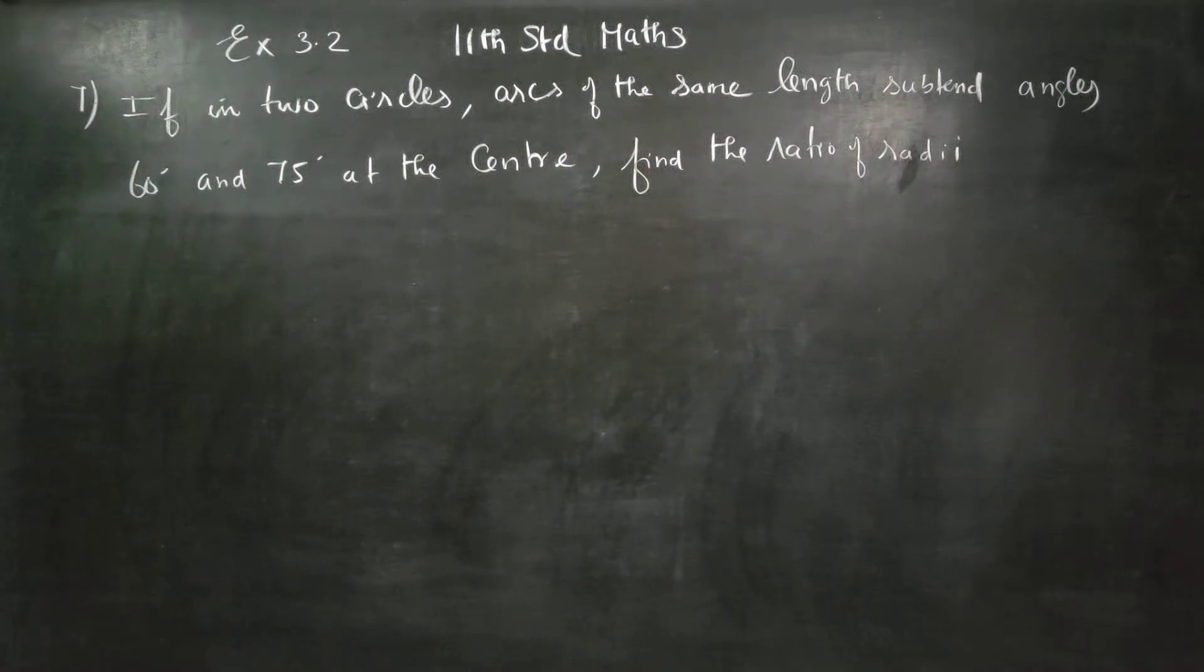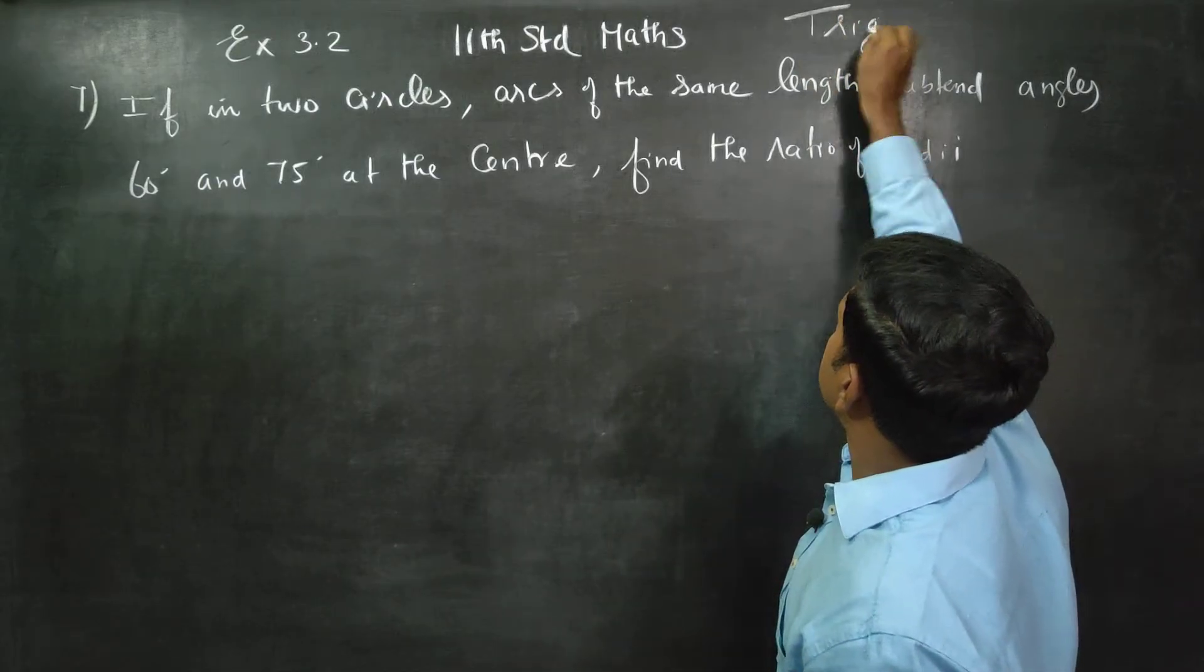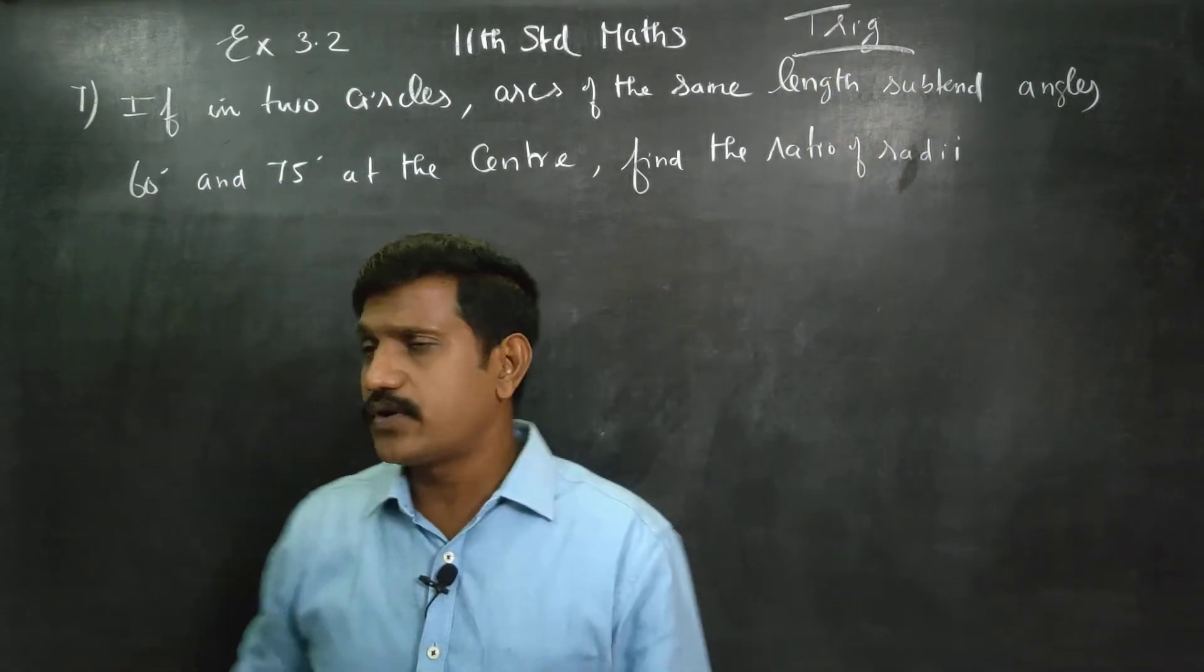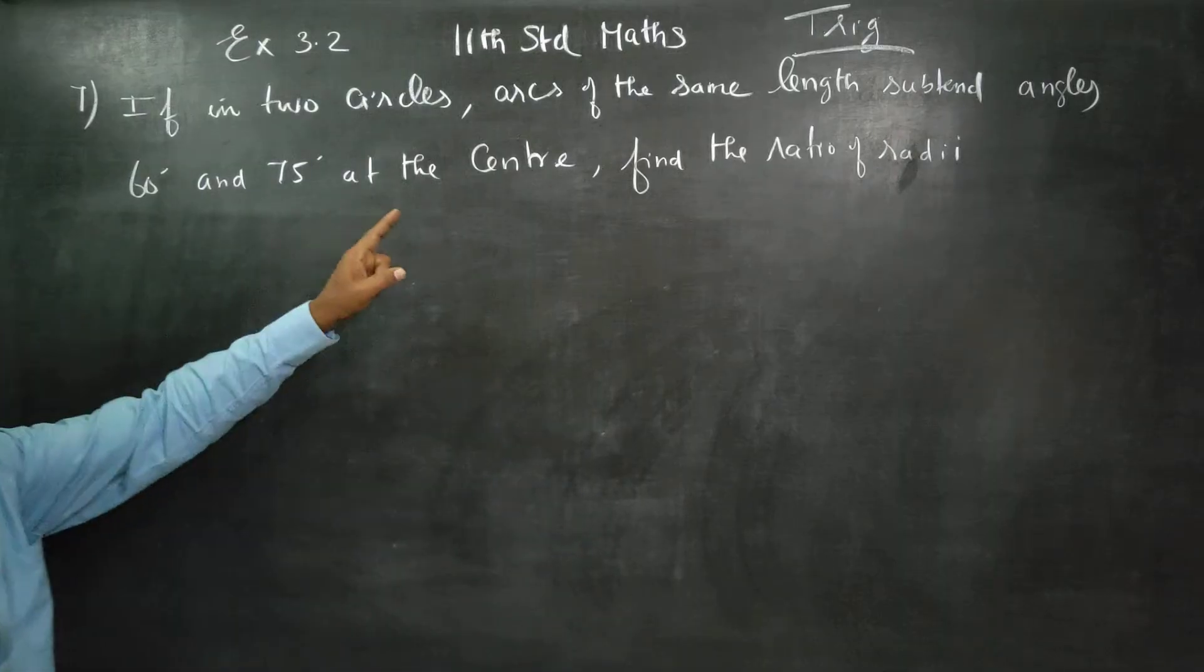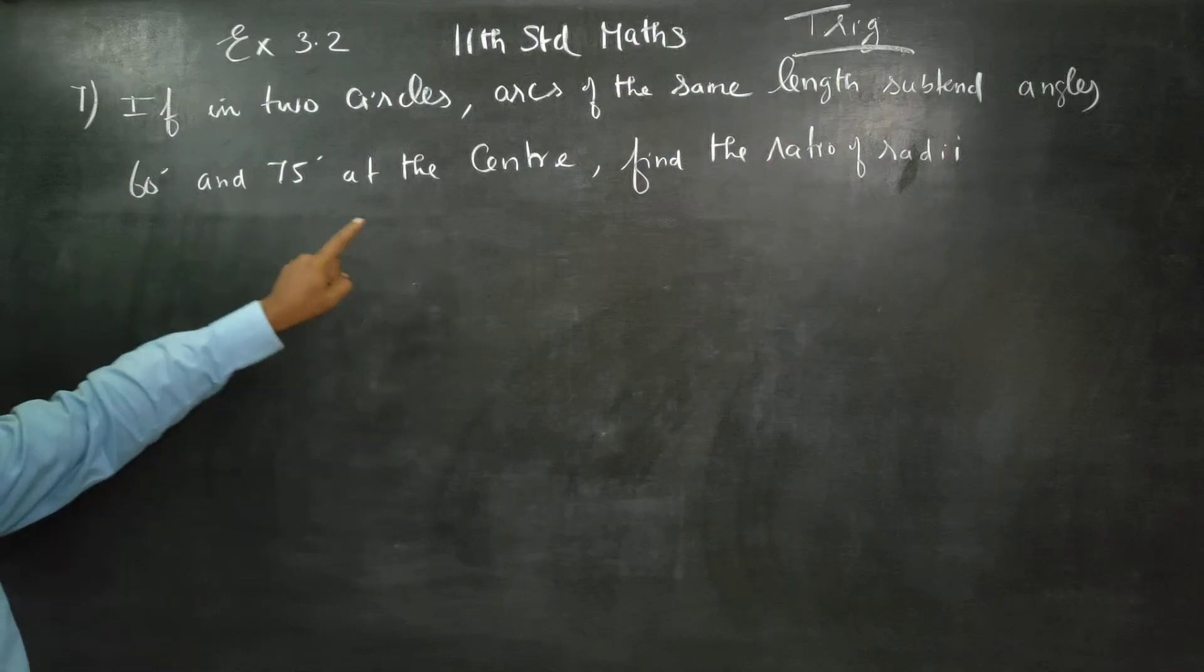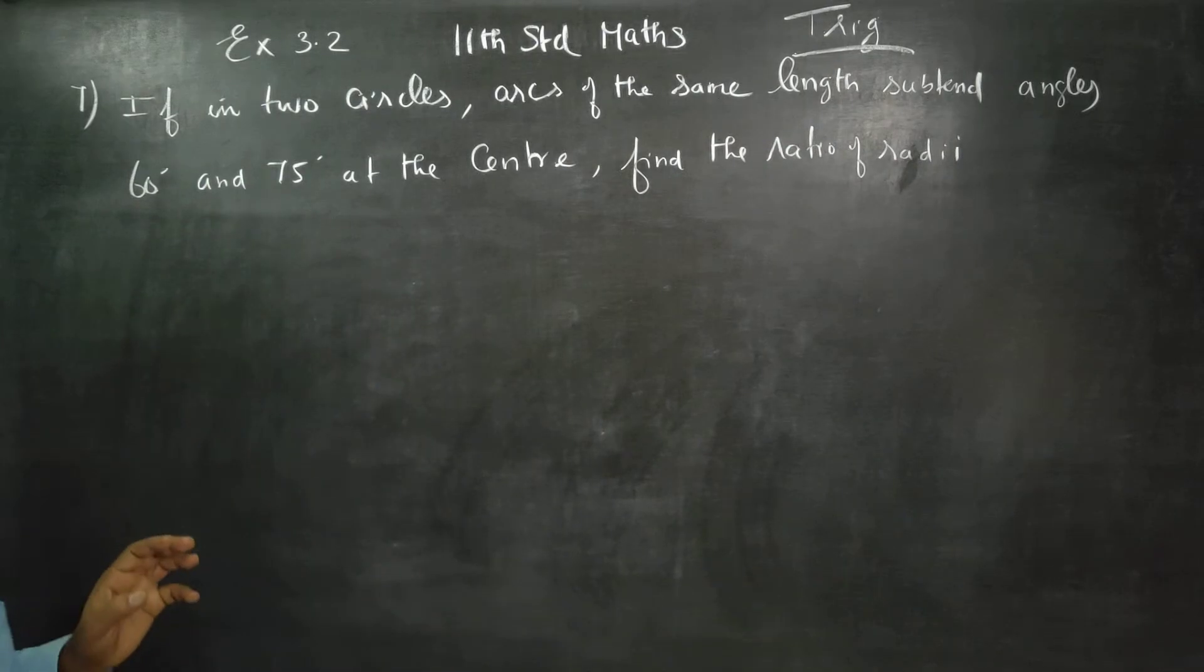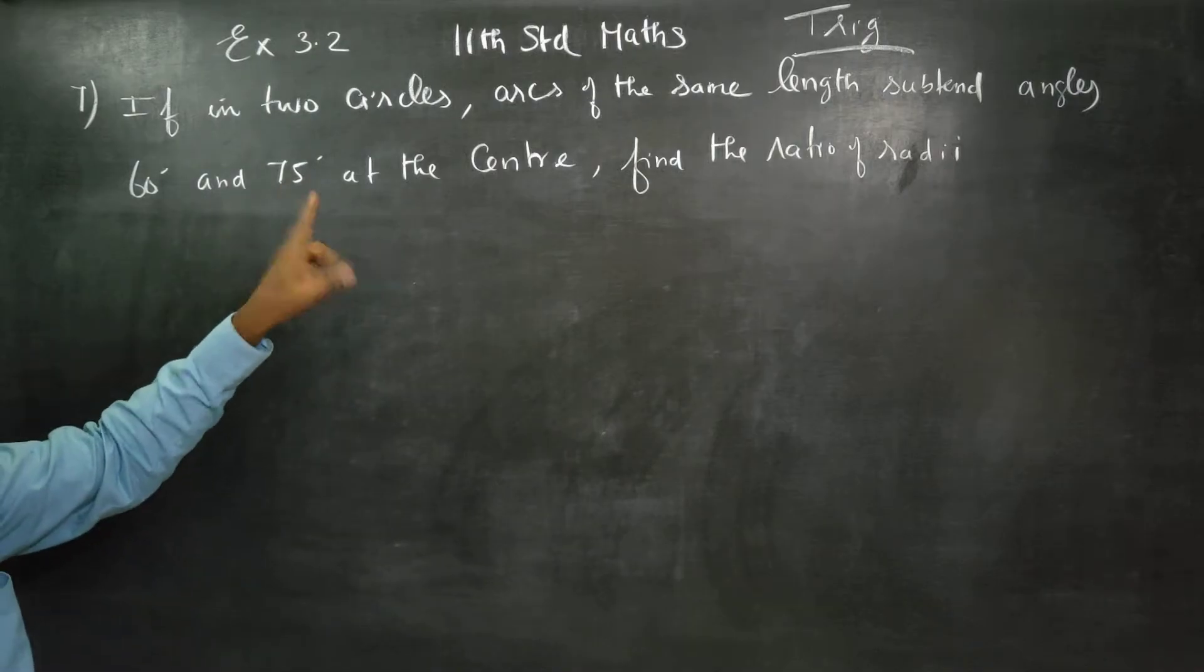Dear Learn Standard students, I am Etro Karnagaran. In chapter 3, Trigonometry. If in two circles, arcs of the same length subtend angles 60 degrees and 75 degrees at the center, find the ratio of the radii. The radii are different, but the arc lengths are the same.